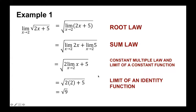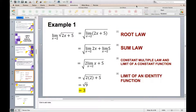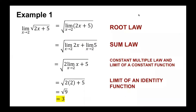This is equal to the square root of 9, and the square root of 9 is equal to 3. Therefore, the limit of √(2x + 5) as x approaches 2 is equal to 3 by the limit law.